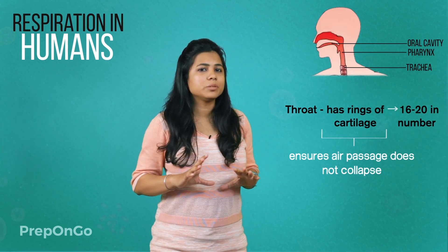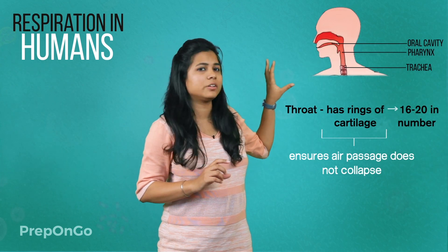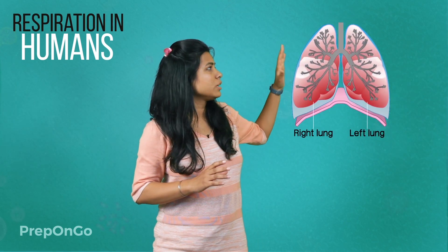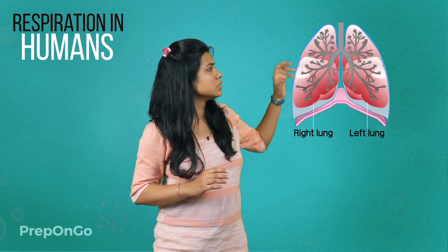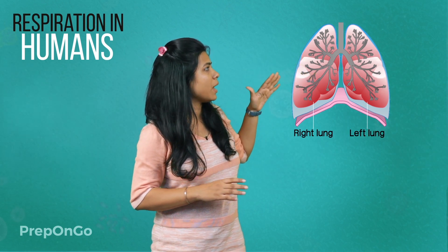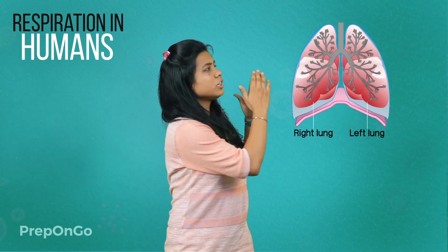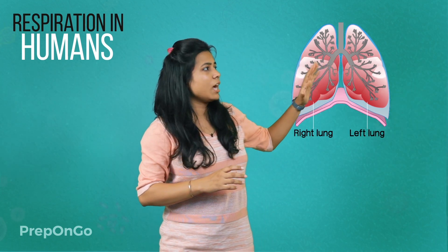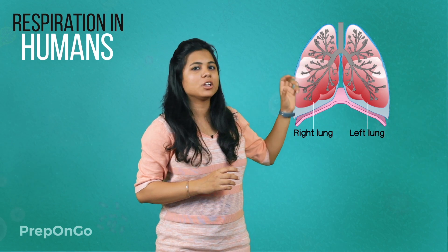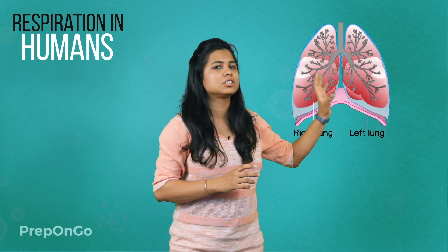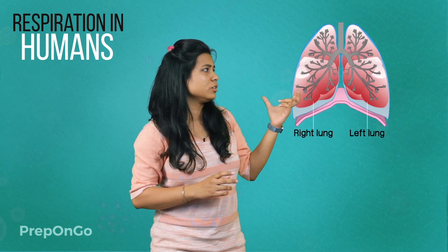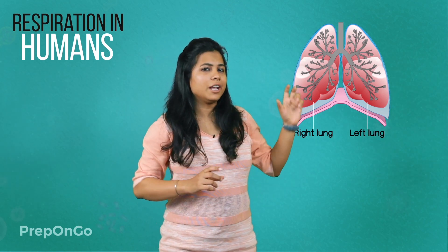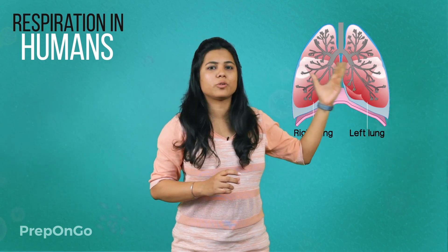There are approximately 16 to 20 rings of cartilage. The trachea is in the throat and extends a little further downward, where it expands and separates into the two lungs — left and right. The left lung is slightly smaller in size compared to the right one, because it provides space for the heart.